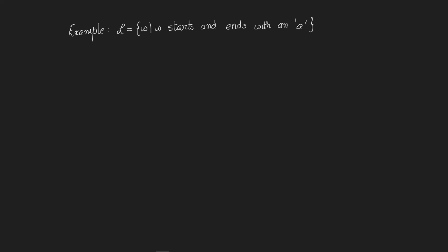In this video, we are going to construct a deterministic finite automaton for the language L containing words that start and end with an A. All words therefore must be of length at least one.